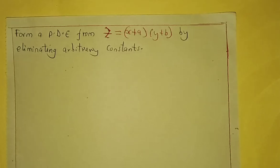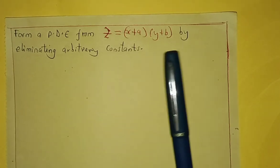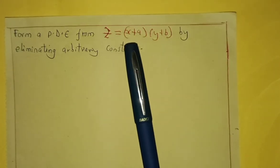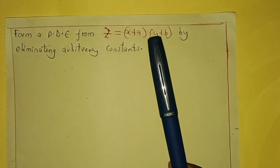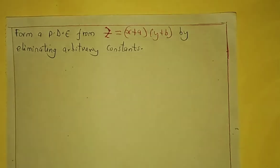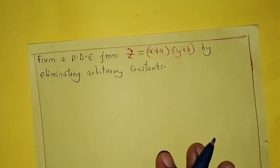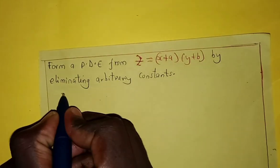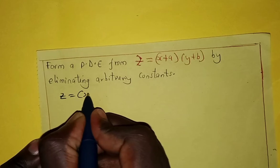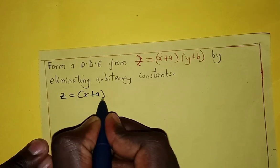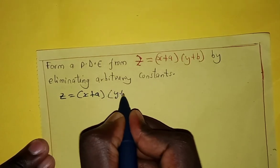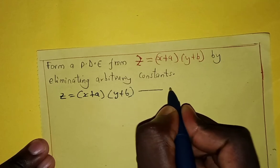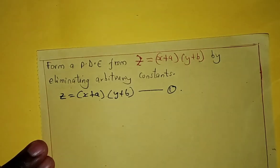Form a partial differential equation from the equation z by eliminating arbitrary constants. The equation z is equals to x plus a, times y plus b. We make this equation 1.